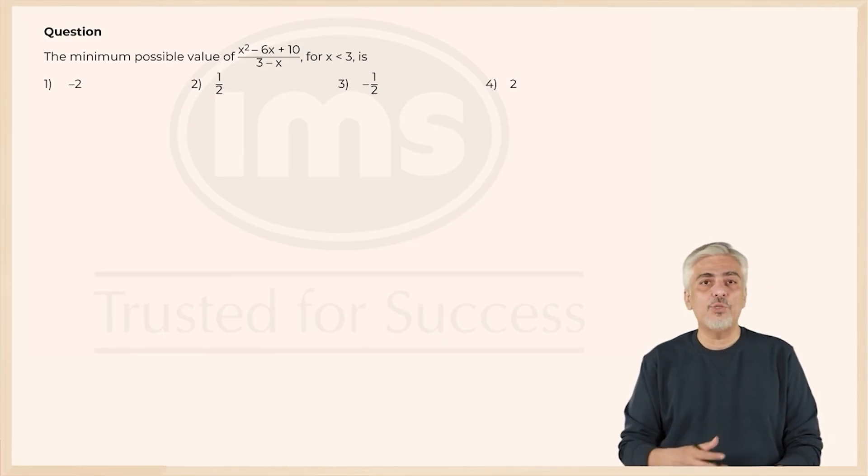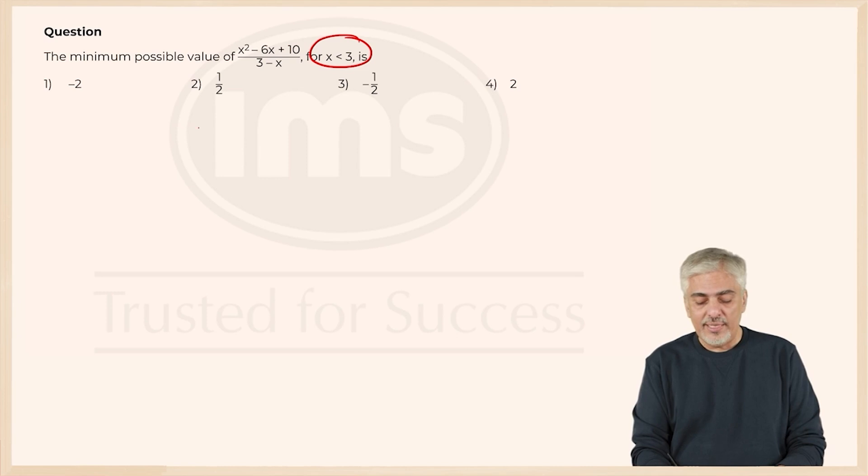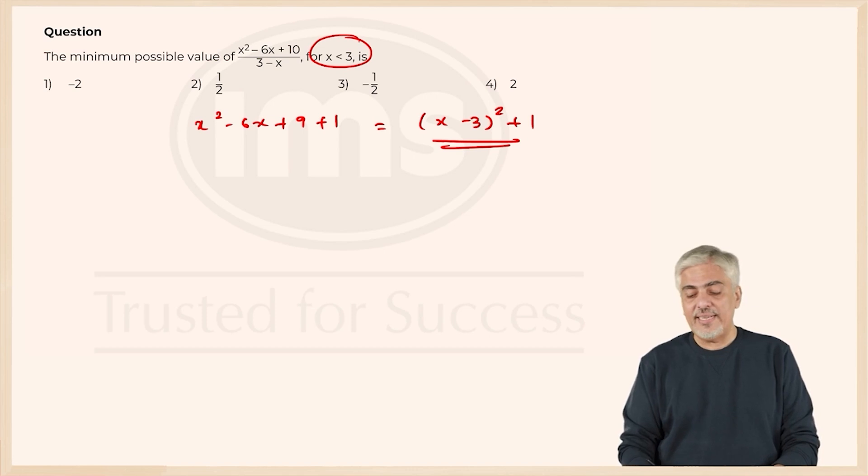The other way I was just thinking when I was doing this question I was thinking if x is less than 3, do you agree if I write my numerator as x² minus 6x plus 9 plus 1, it is x minus 3 the whole square plus 1, which means my numerator can never be negative, it is always positive.